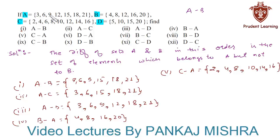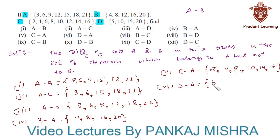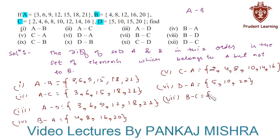Here we can see that 5, 10 and 20 are present in set D only and not in set A. Next we have to find B minus C, that is the set of all elements that are in set B but not in set C.